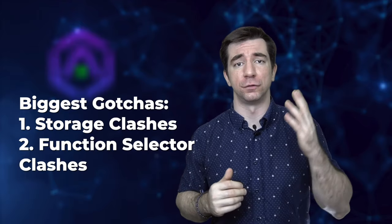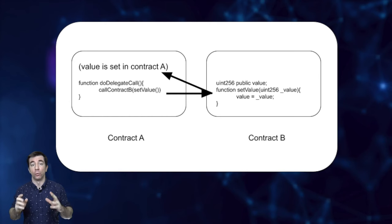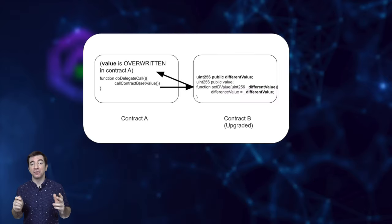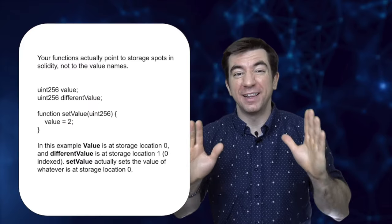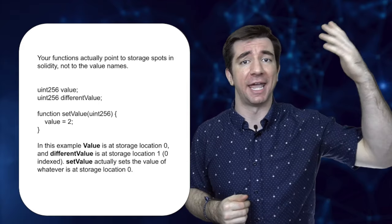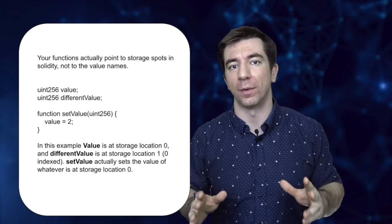The two biggest gotchas are storage clashes and function selector clashes. When we use delegate call, we do the logic of contract B inside contract A. So if contract B says we need to set value to 2, we go ahead and set value to 2. But we actually set the value of whatever is in the same storage location on contract A as contract B. This is really important to know because it means we can only append new storage variables in new implementation contracts and we can't reorder or change old ones. This is called storage clashing.